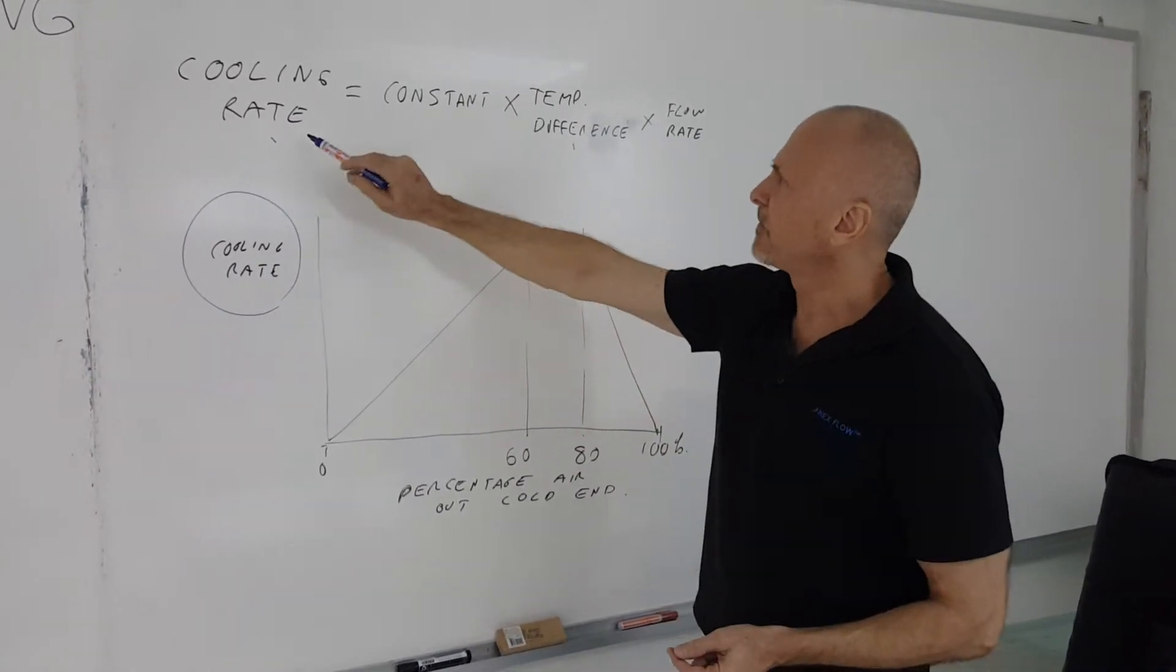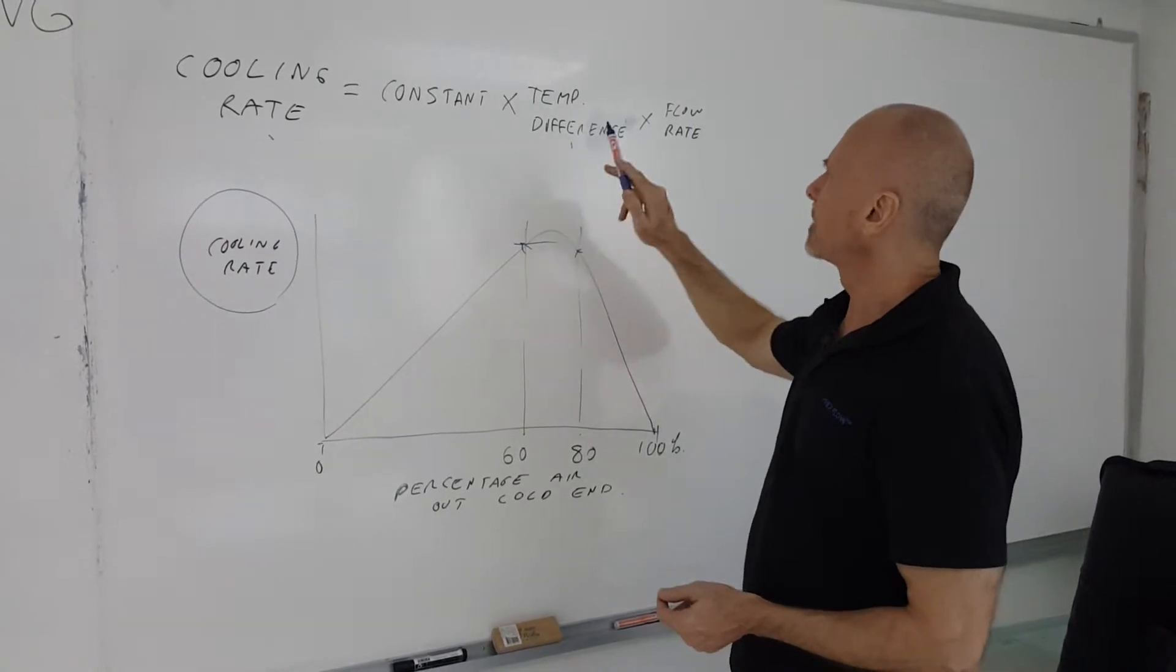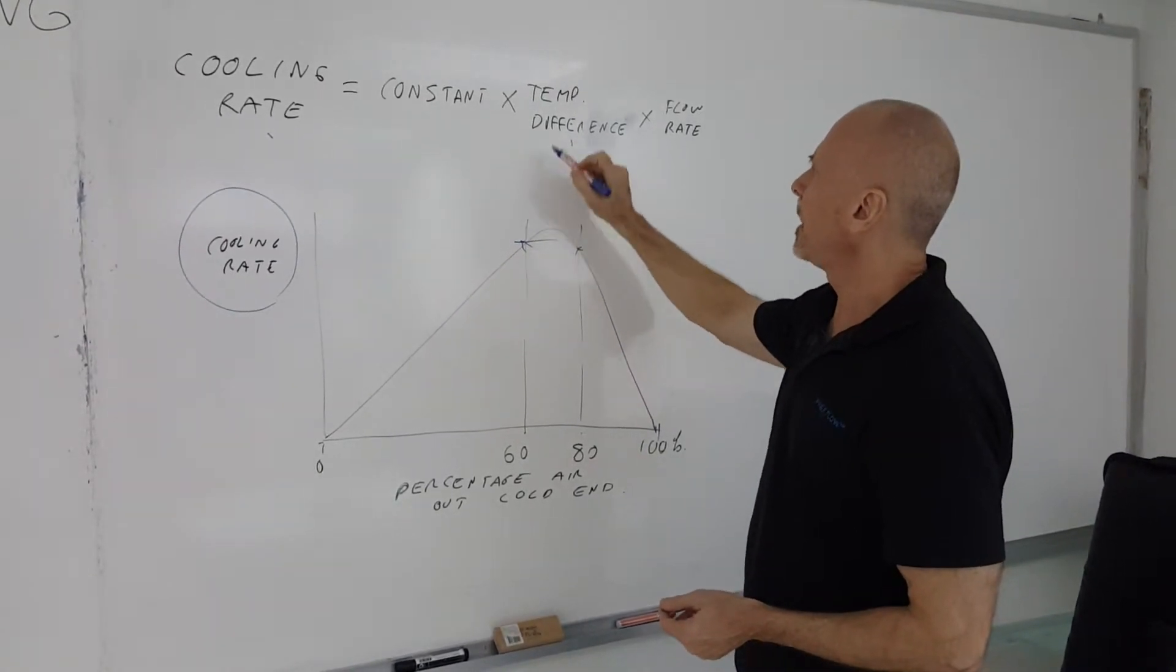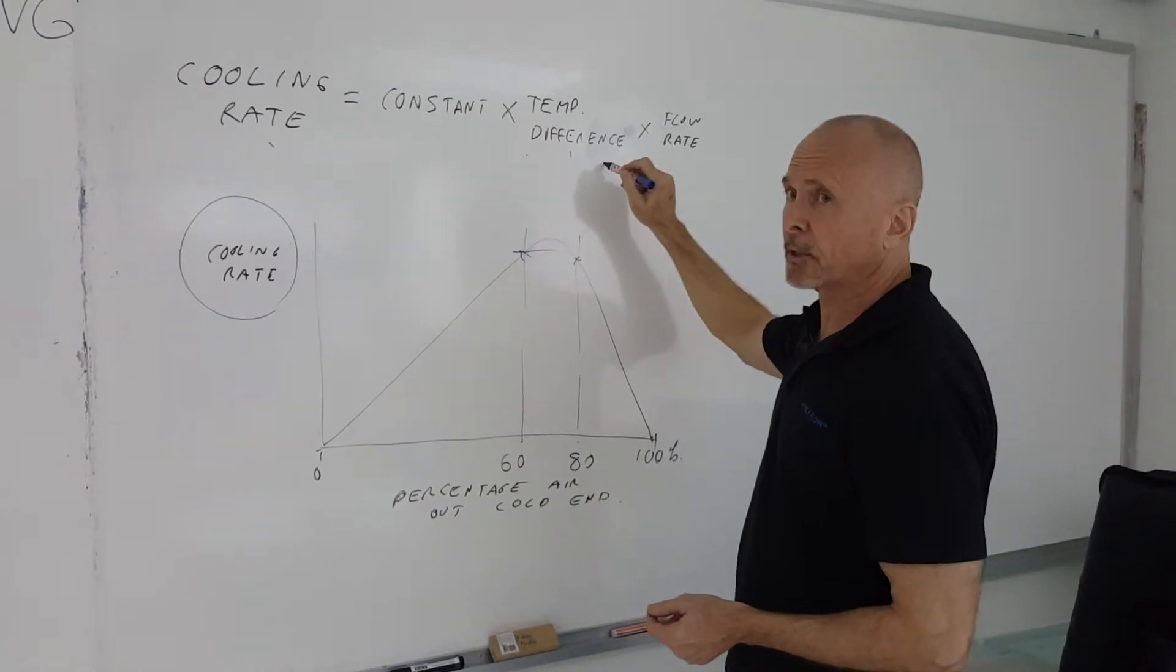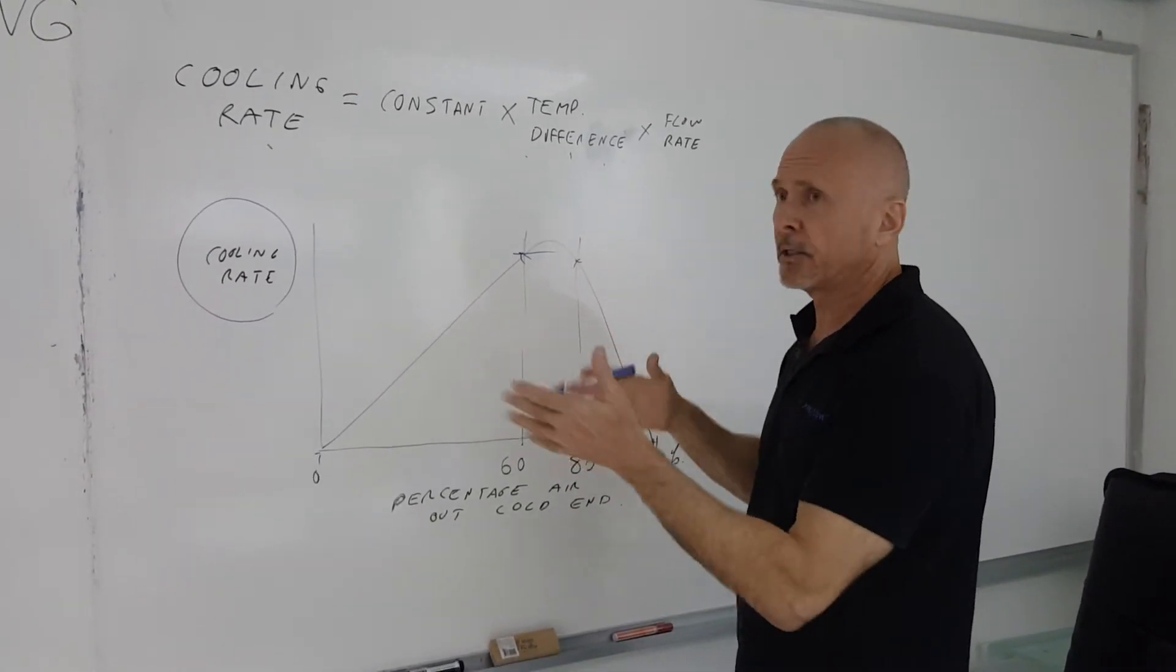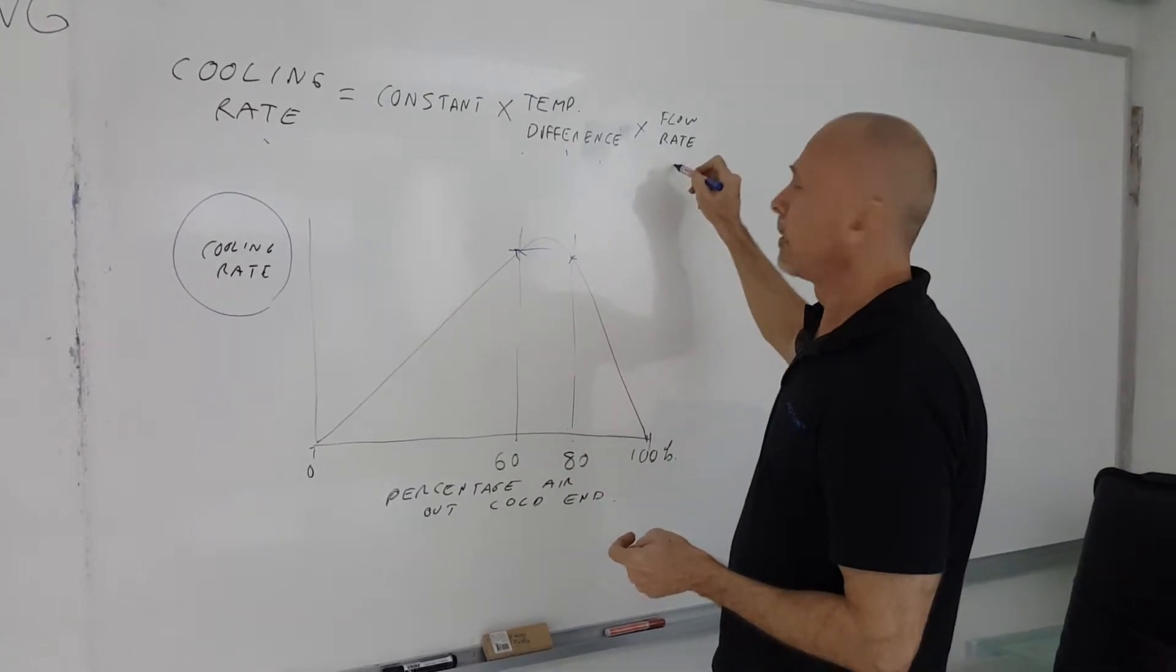But somewhere between 60 and 80% of the air coming out the cold end gives you the best cooling rate. The cooling rate is defined as some constant times the temperature difference, the temperature being the temperature of the cold end and a reference temperature of the outside temperature that you're going into, let's say 100 degrees Celsius, and the flow rate.